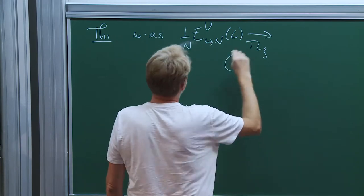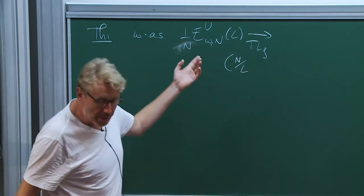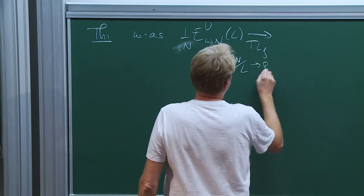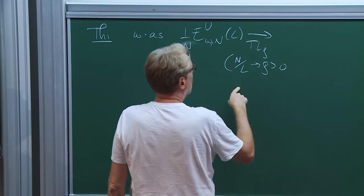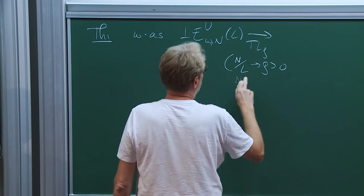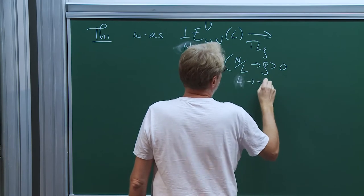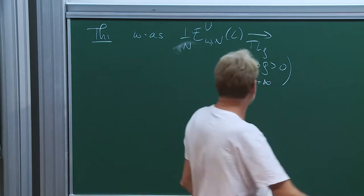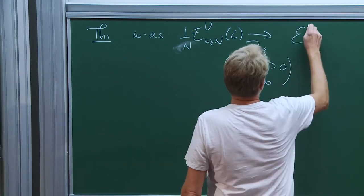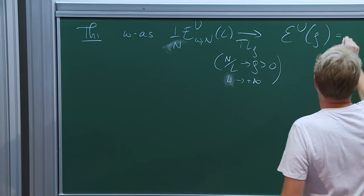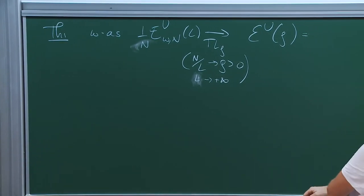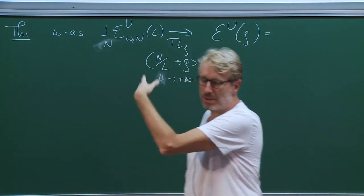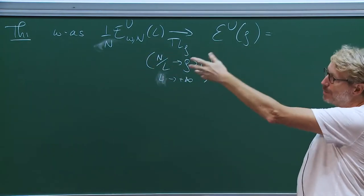...u, L, this converges in the thermodynamic limit rho — meaning when n divided by L goes to rho, which is a positive number, and L goes to infinity. This is the meaning of thermodynamic limit rho. So this converges to some function. The important thing, the interesting result, is that essentially because the model is ergodic, just ergodicity is enough to prove such results.